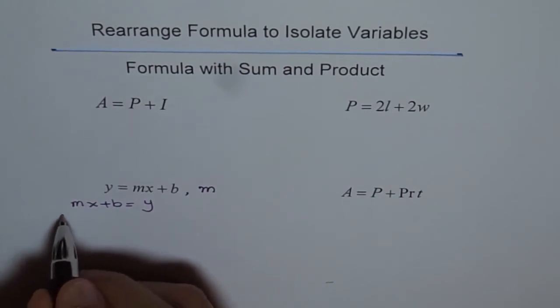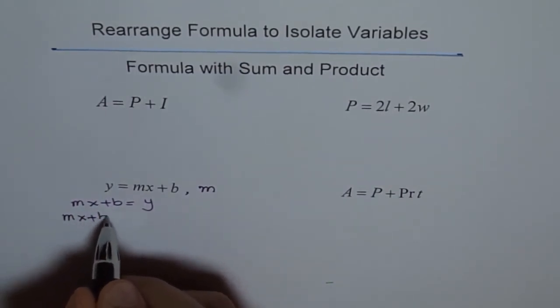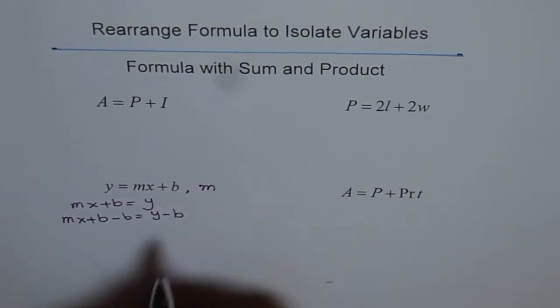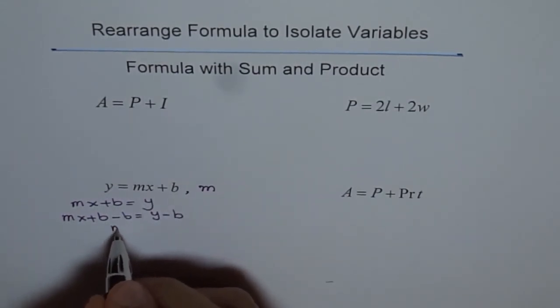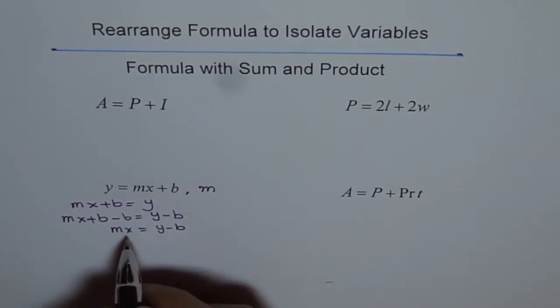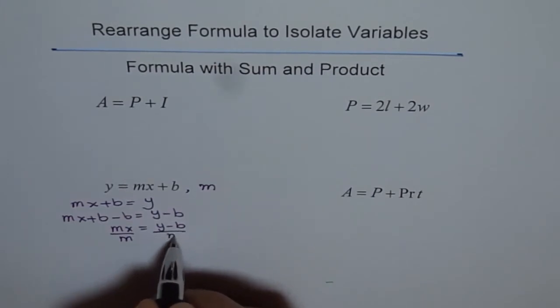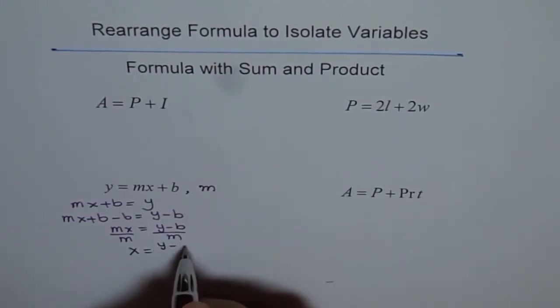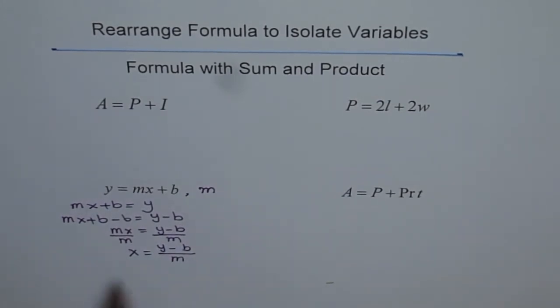So, first step is, we have MX plus B minus B equals to Y minus B. So, that gives me MX equals to Y minus B. To find X, I will divide by M. So, let me divide by M both sides, and then I get X equals to Y minus B, divide by M. That is how I am going to isolate for X. So, this is the process of isolation.